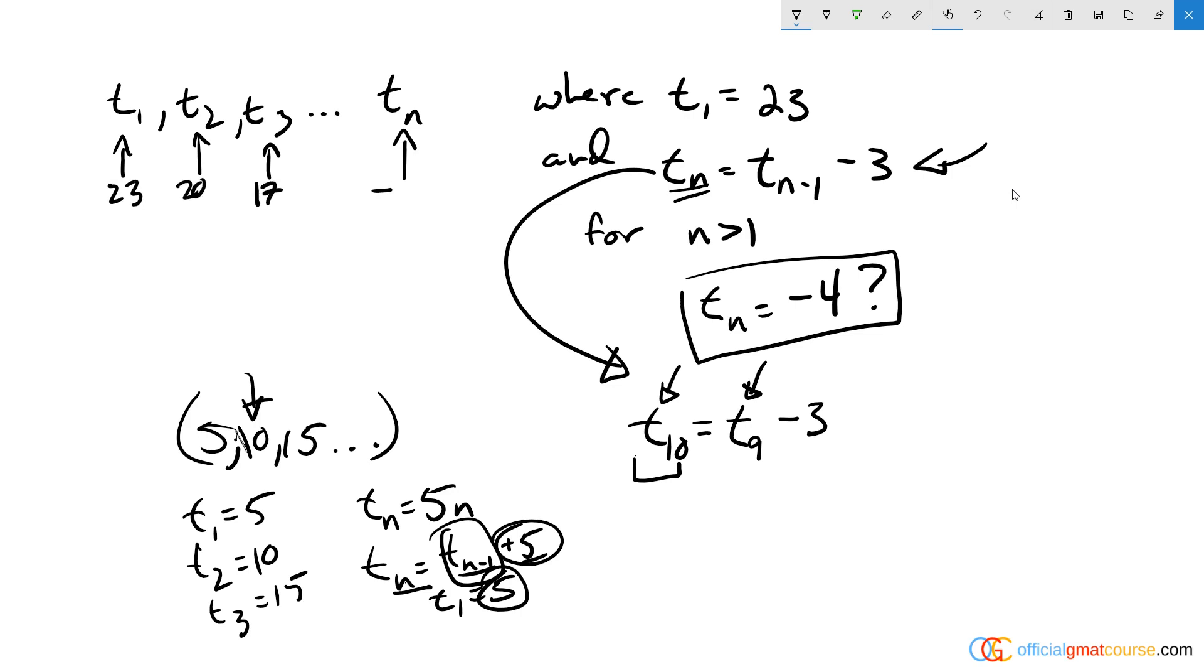And we're looking for what number it will, what number will have when we equal negative 4. The elegant way to solve this is if I think about it, the value of t sub n is also really equal to 26 minus 3 times n. So for the first number, it's 26 minus 3 equals 23.